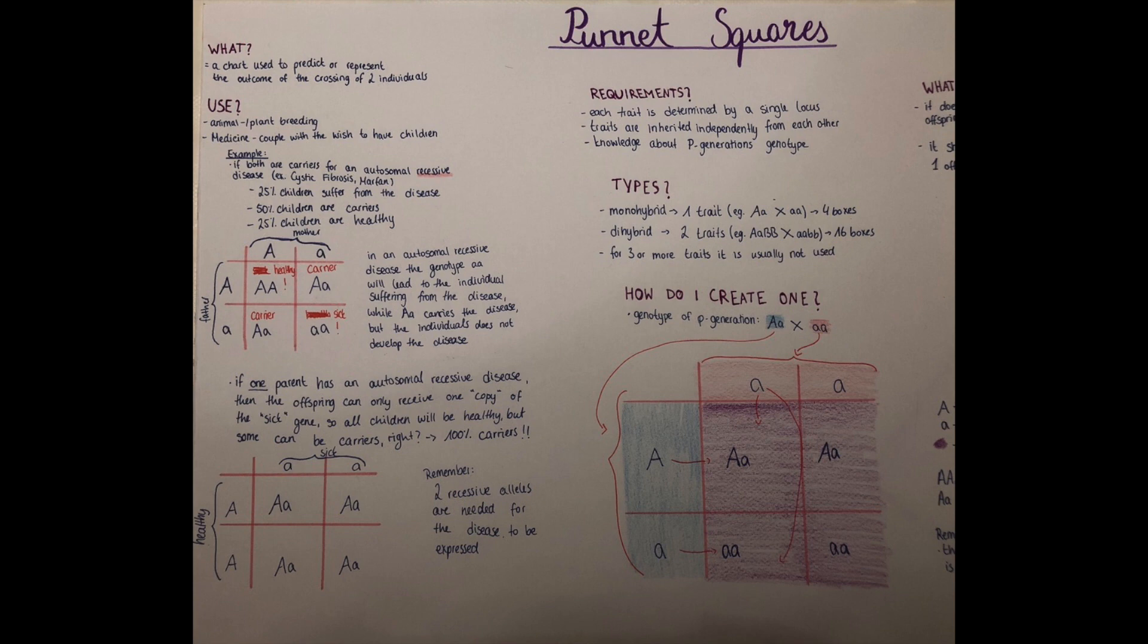Okay, another example. If one parent has an autosomal recessive disease and also has symptoms for it, so has a homozygotic recessive genotype, and the other parent is healthy so has a dominant homozygotic genotype, then we see here that all the children will be carriers because they will get one recessive allele from one parent, the one who has the disease, and one dominant allele, so the healthy allele, from the other parent.